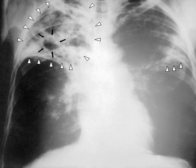When people with active pulmonary TB cough, sneeze, speak, sing, or spit, they expel infectious aerosol droplets 0.5 to 5.0 micrometers in diameter. A single sneeze can release up to 40,000 droplets. Each one of these droplets may transmit the disease. Since the infectious dose of tuberculosis is very small, the inhalation of fewer than 10 bacteria may cause an infection.